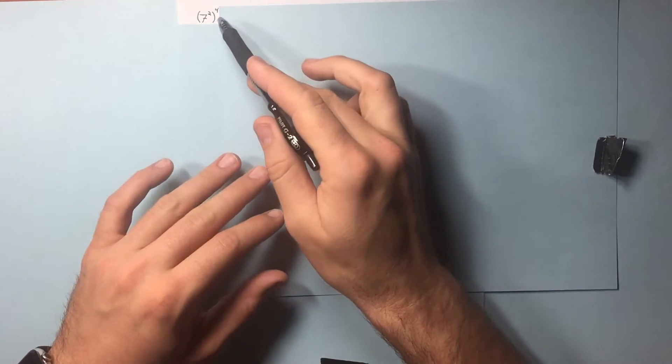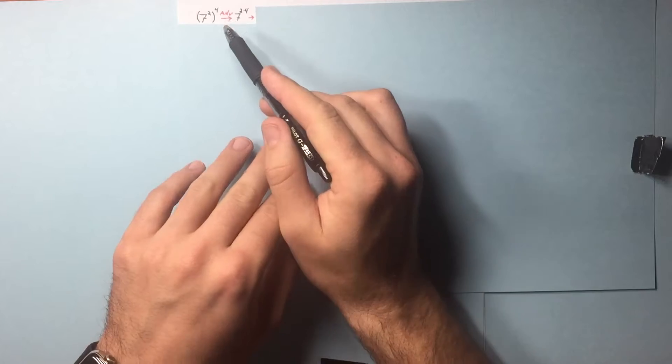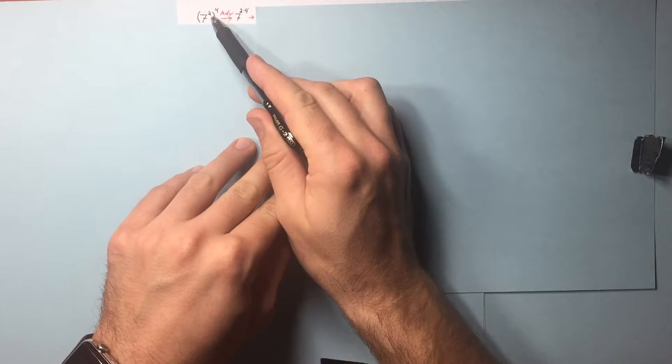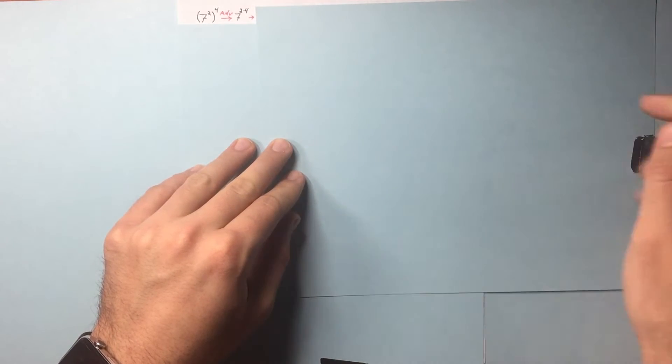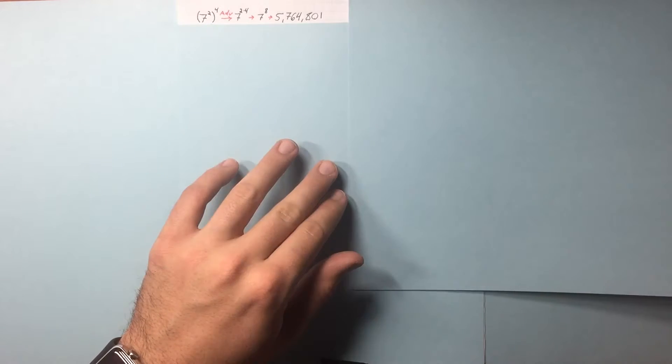What if you get a problem like this? 7 squared to the 4th power. Multiply this exponent by this exponent. It's 7 to the 2nd times 4th power. 7 to the 8th power. That's our answer.